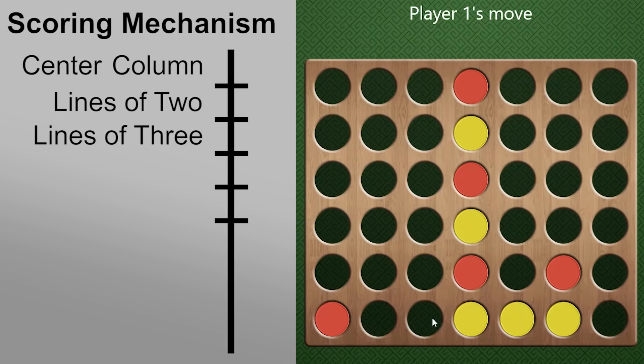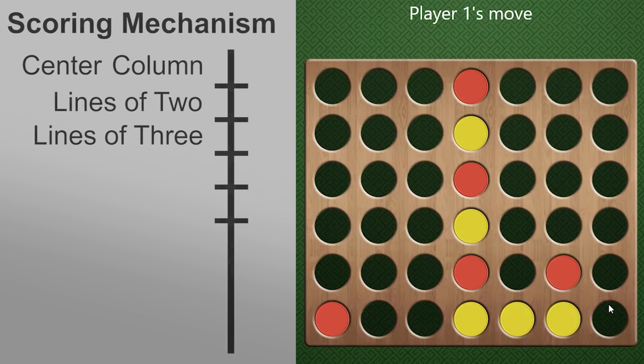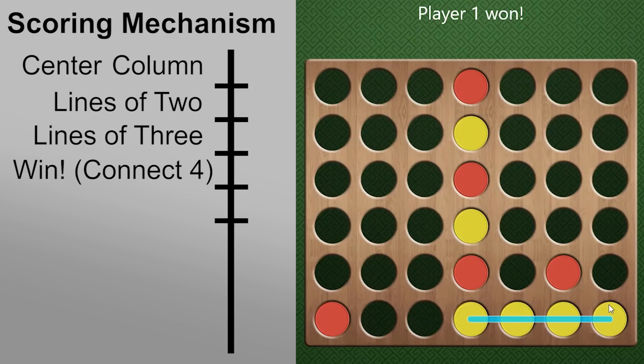And so he couldn't block both of my opportunities to win. And, you know, it's kind of a simple decision to make where you want to drop your piece now. There's two places I can win. So I'm going to choose one of those two to win.